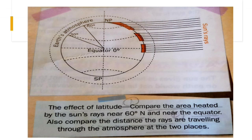To see how direct rays give more heat than slanting rays, see the effect of latitude. Compare the area heated by the sun's rays near 60 degrees north and near the equator. Also compare the distance the rays are traveling through the atmosphere at the two places. Can you see the two poles? This is north pole and this is south pole. So here we have the equator. This is the sun rays which directly fall, and children, this is the earth's atmosphere.